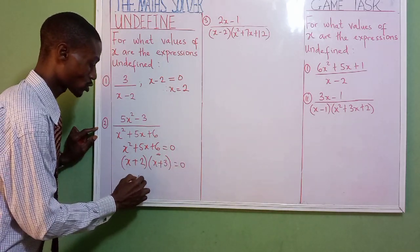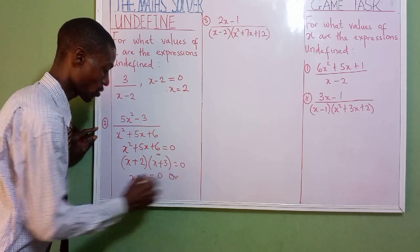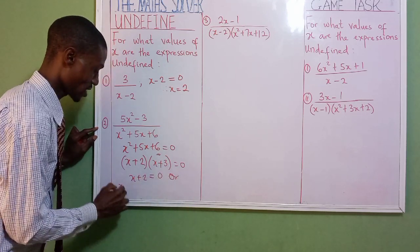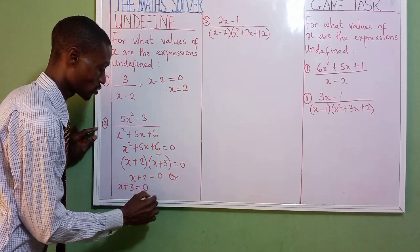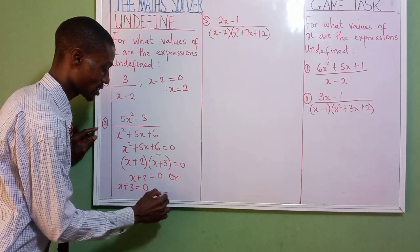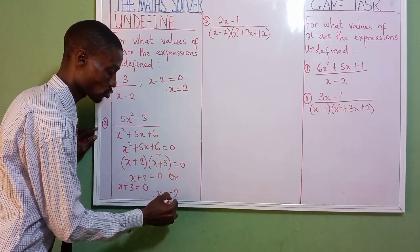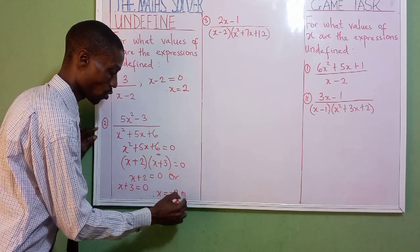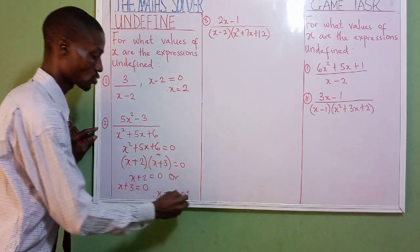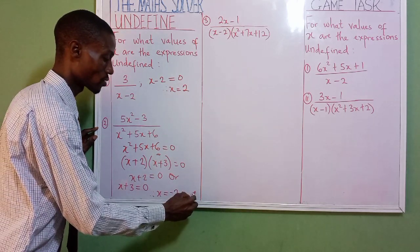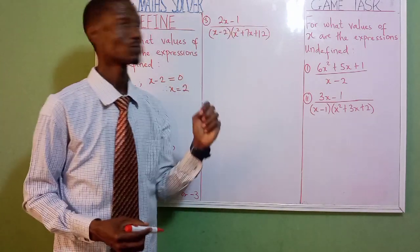That gives us (x plus two)(x plus three) equals zero. So x plus two equals zero or x plus three equals zero. Therefore x equals minus two, or x equals minus three. That's all.